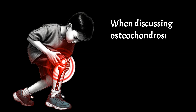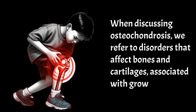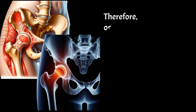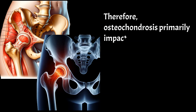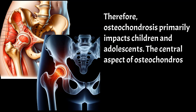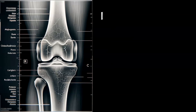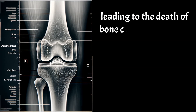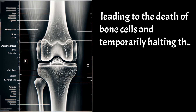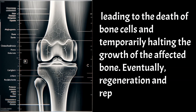When discussing osteochondrosis, we refer to disorders that affect bones and cartilages associated with growth. Therefore, osteochondrosis primarily impacts children and adolescents. The central aspect of osteochondrosis is that the blood supply to the growing bone is disrupted, leading to the death of bone cells and temporarily halting the growth of the affected bone. Eventually, regeneration and repair occur.